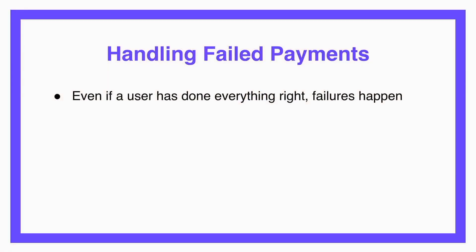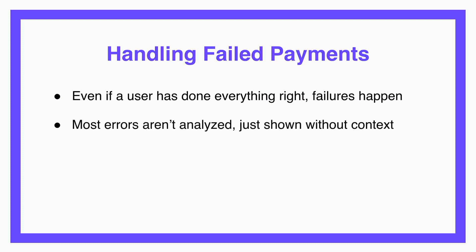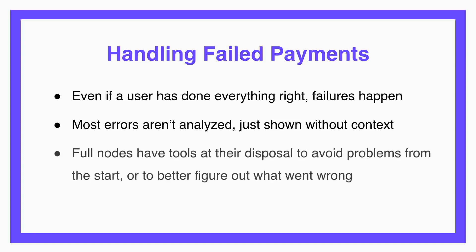Now our users have some inbound and outbound liquidity and are making payments on the network. But even if a user does everything right, failures are going to happen. And unfortunately, the current state of affairs is that we aren't really analyzing our errors or doing our best to make sense of them. We typically just turn it into a string, throw it up on the screen, and say 'sorry, your payment failed.' We don't have any context there. But nodes have a lot of tools at their disposal to not only analyze these errors and figure out what went wrong, but to prevent them in the first place.